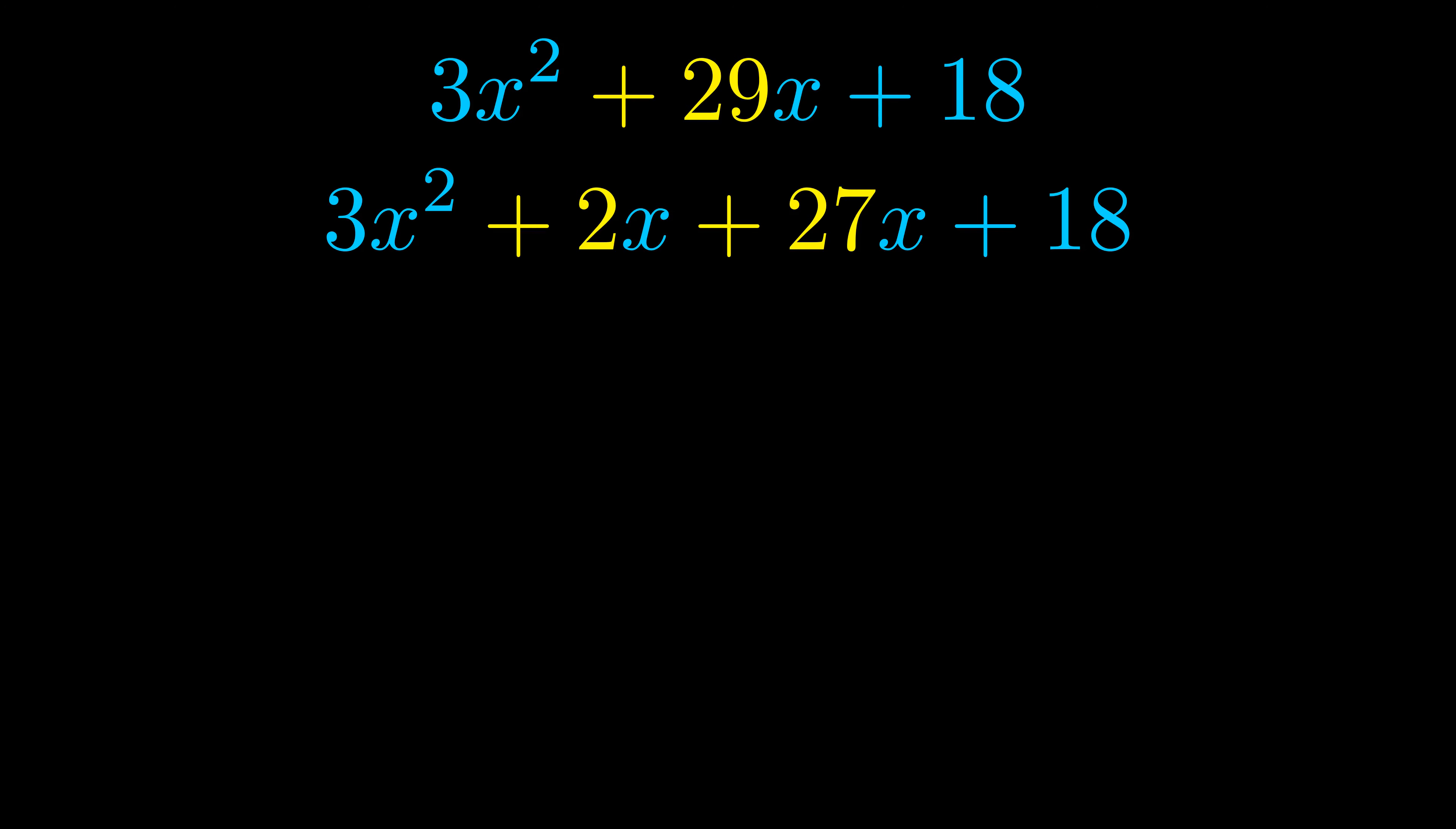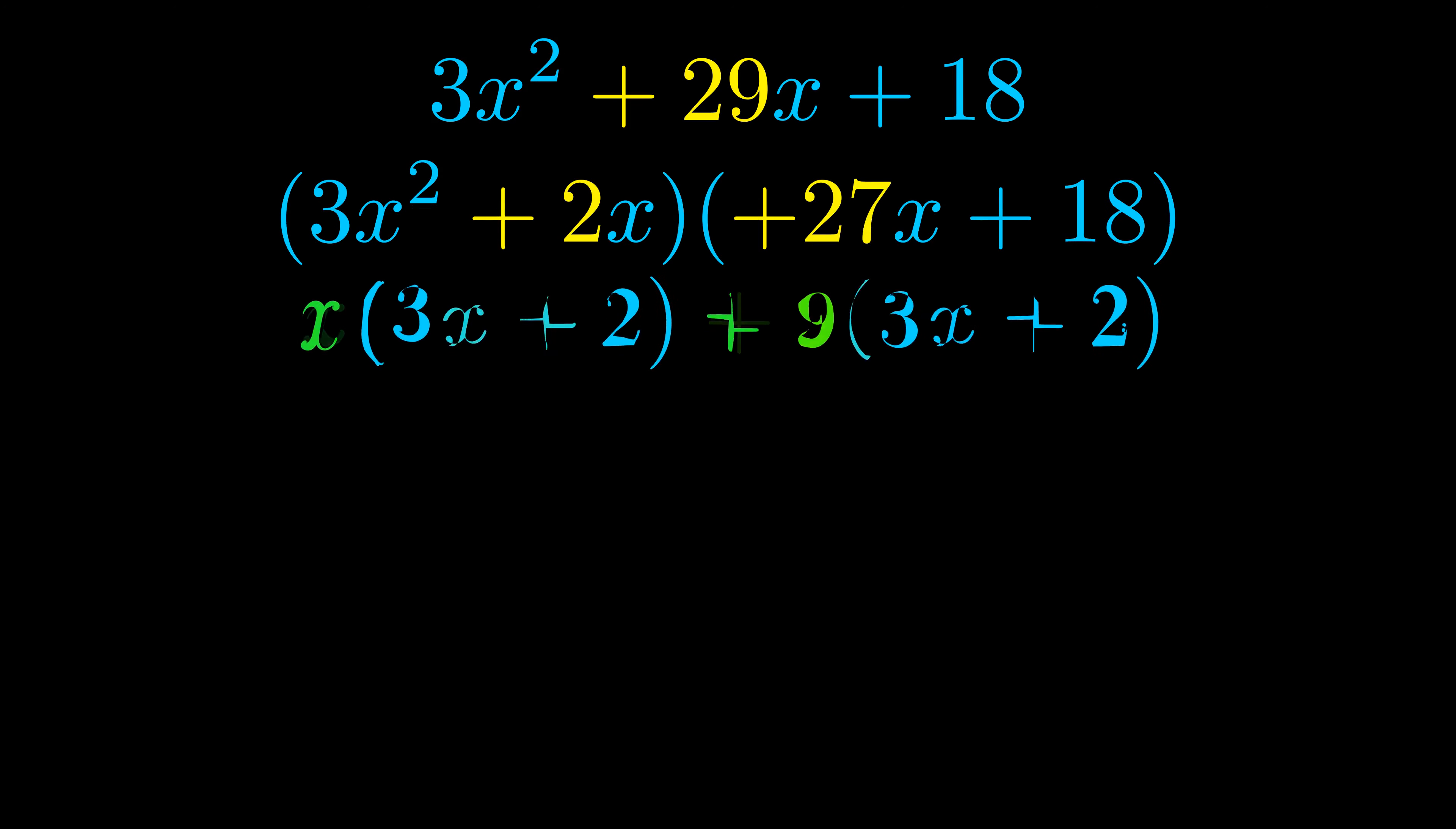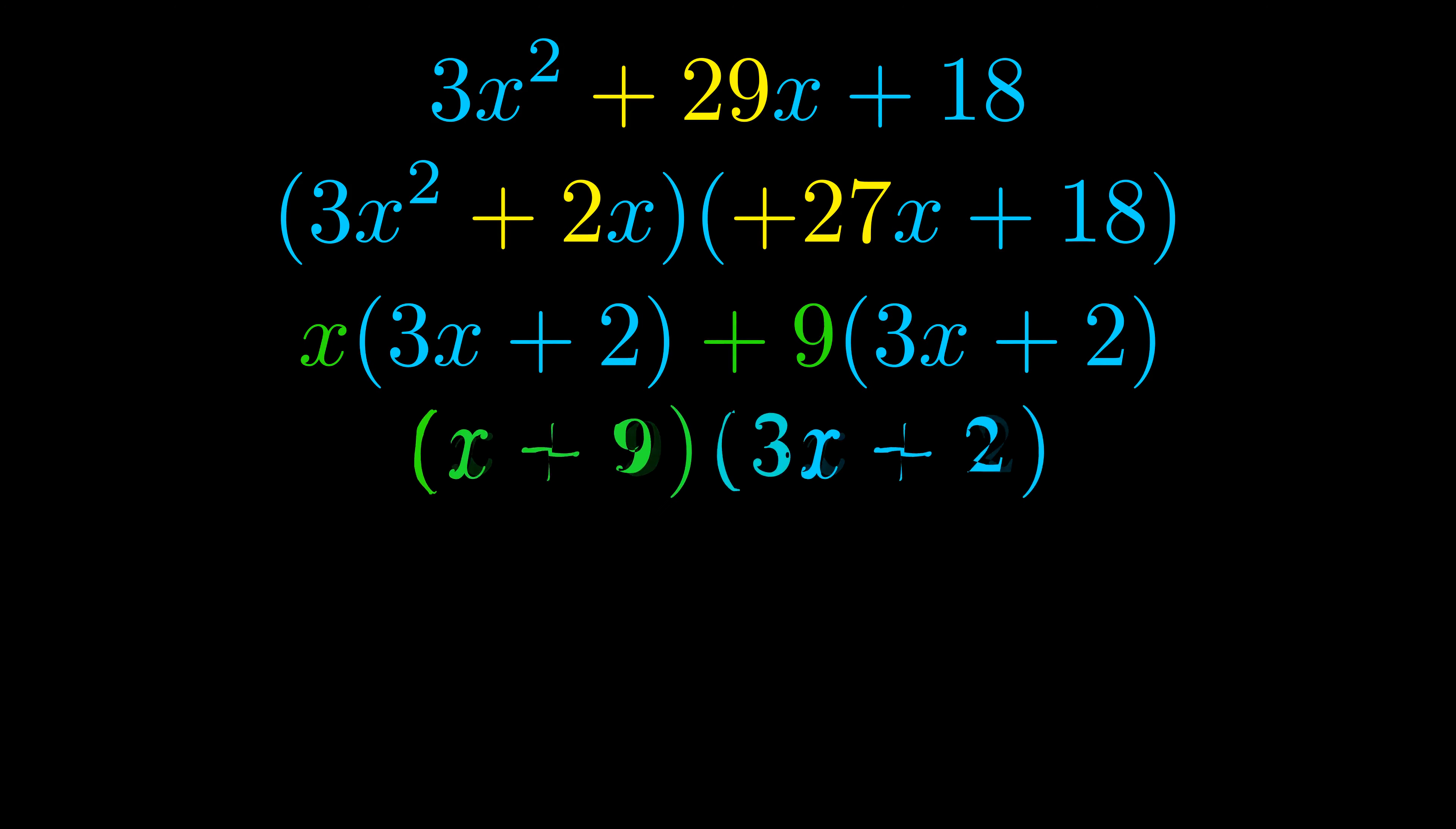Once we've done this we go ahead and we put parentheses around the first term and the last term and we do that so that we can take the greatest common factor out of both terms. We can see the greatest common factor is now outside in green. Notice also how what remains inside of the parentheses is the same in both cases. The blue values are the same.